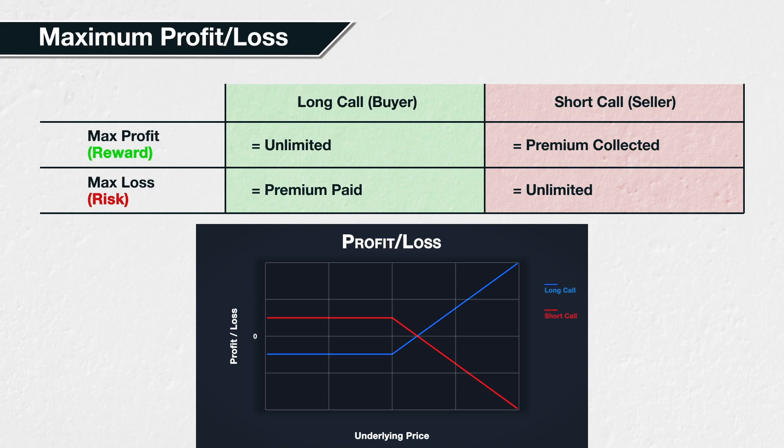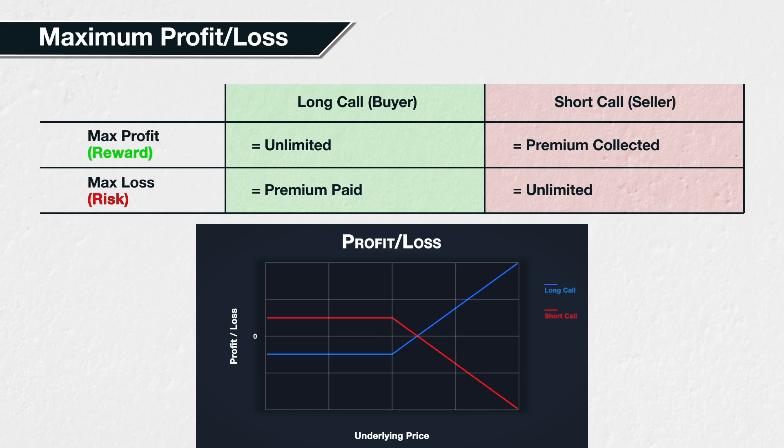When the call option buyer has their maximum profit, the call option seller has their maximum loss. Again, this is unlimited or undefined if you prefer. For every dollar higher the underlying price is at expiry, that's another dollar the call seller owes to the call buyer.